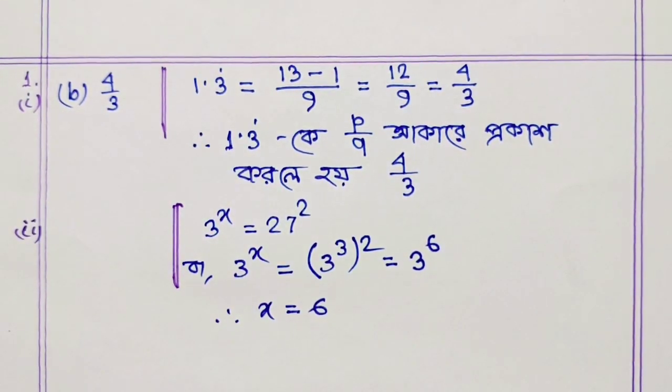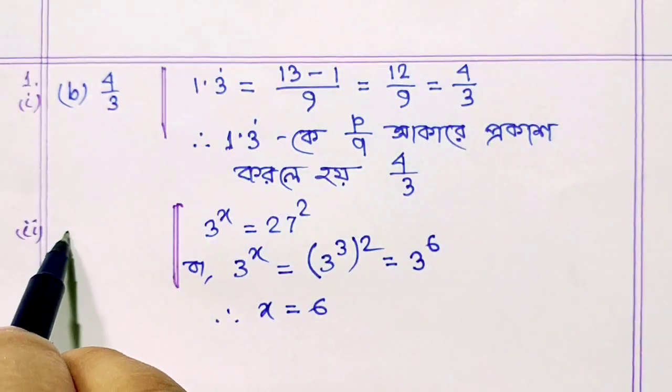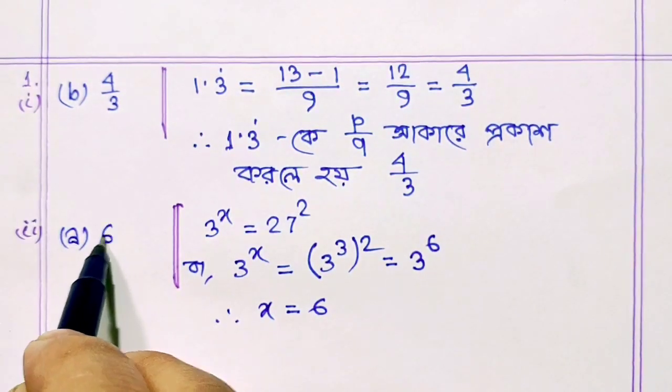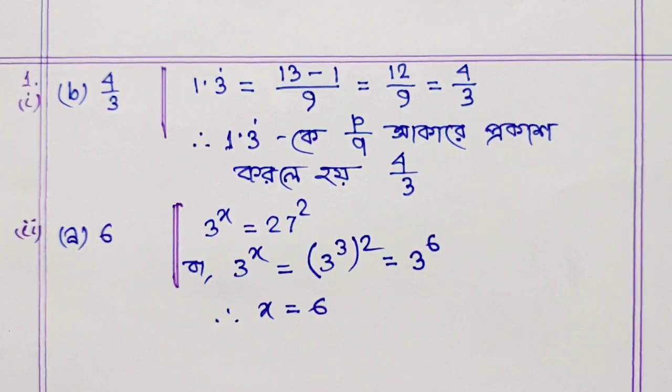A to the power X equal 6. So the answer is 6. Option A: 6 is correct.